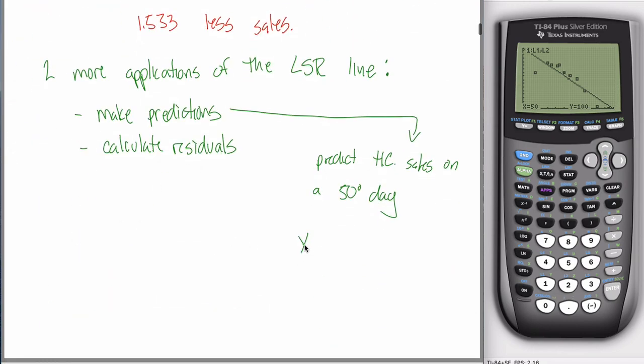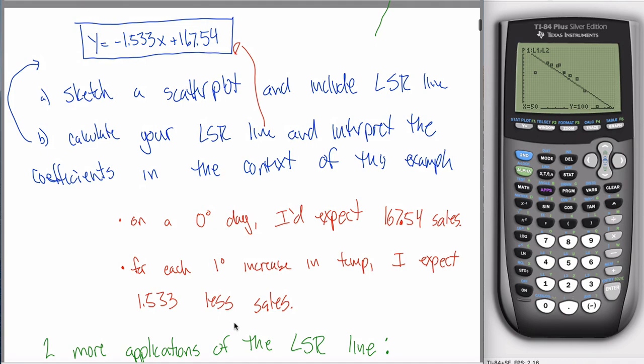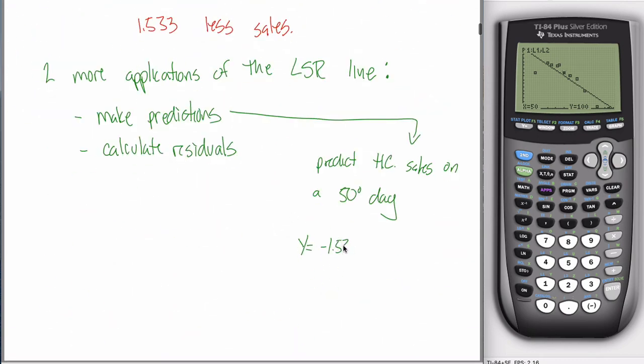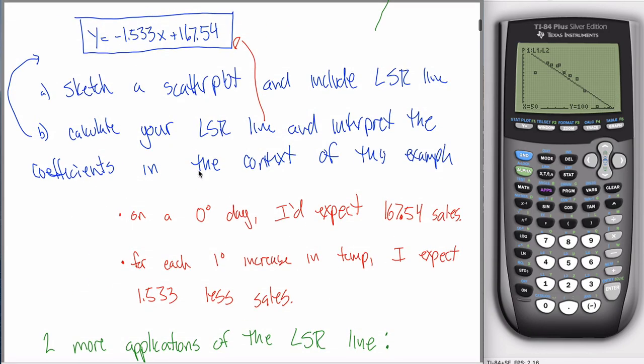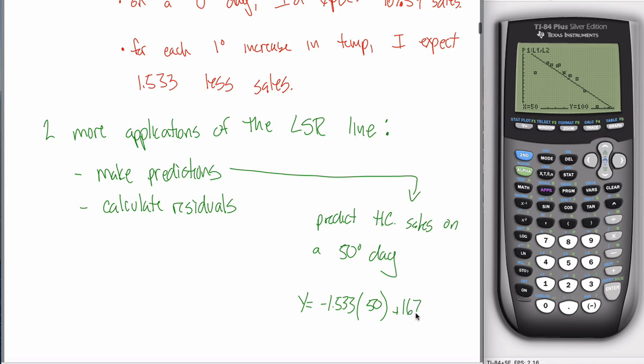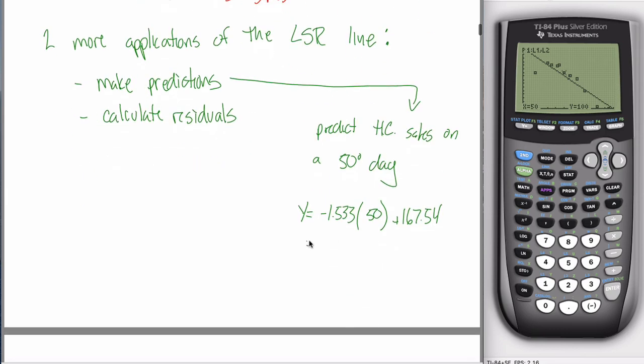Maybe we can calculate it a little bit more precisely. We want to know what's the height of the line when the X value equals 50? Well, we have this equation that tells us the height, the Y value of the line for any X value. So if you want to know the height of the line when X equals 50, all you got to do is copy this equation, change the X into a 50. So I could say Y equals negative 1.533, and then instead of writing X, write 50, the value of X that I want to predict, and then plus 167.54. And that's easy. I can just plug that into my calculator.